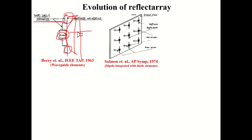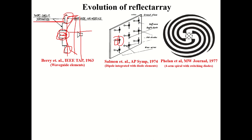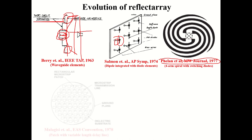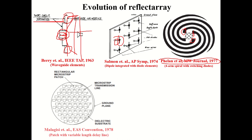Next, by employing dipole elements integrated with diodes, the required phase shift was achieved by controlling the biasing of the element, though the bandwidth was very narrow. After that, a four-arm spiral with switching diodes was proposed: by switching the diodes, different spirals are connected, and based on which spirals are connected, different phase corrections can be employed.